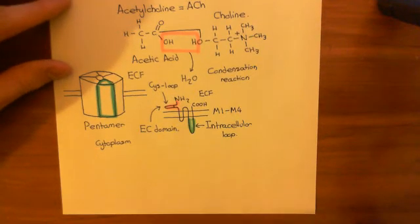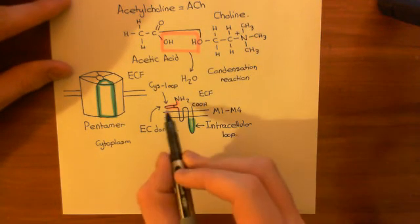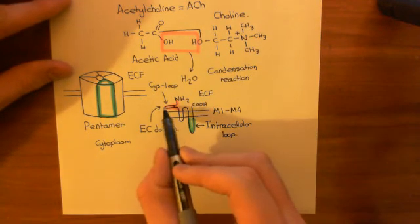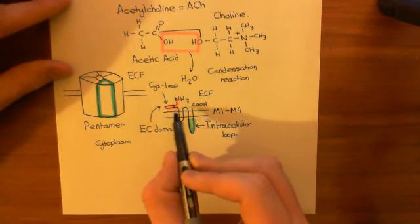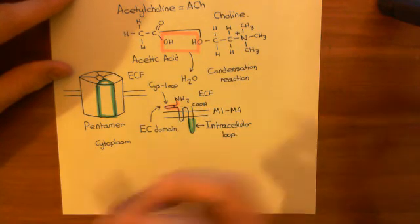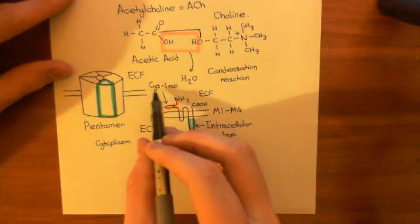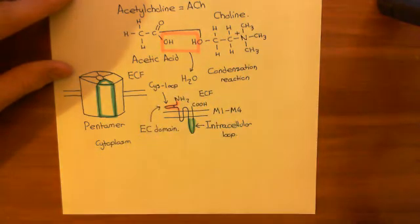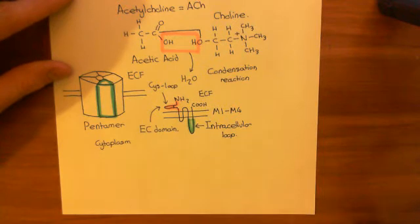A cys-loop is a loop in the polypeptide that is held together by disulfide bridges between cysteine amino acids, hence the name cys-loop. It's a loop which is held together by cysteines.